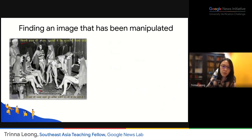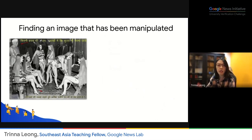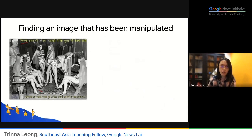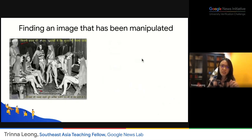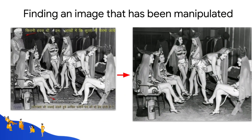Manipulated images commonly circulate online and get recycled time and again. Here is an example: an image on the left is an attempt to tarnish the reputation of former Indian leader Nehru. Numerous fake pictures have been circulating consecutively over the last few years in morally compromising situations. We can easily debunk these with a simple reverse image search — in this case, the original image is on the right.